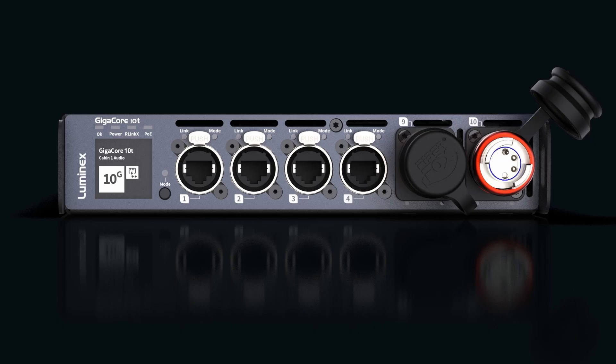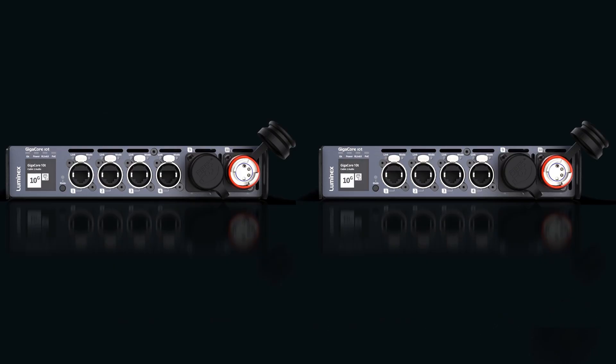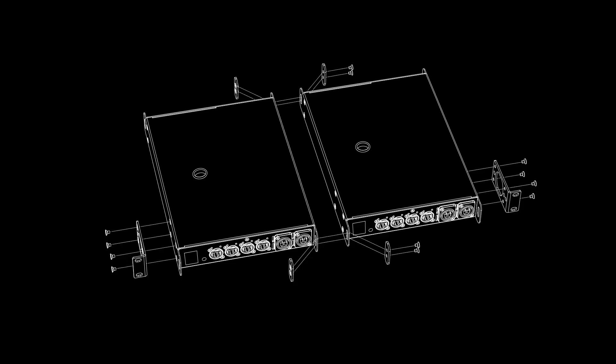Because of the nature of AVB, a truly redundant AVB network needs separate switches for the main AVB-A network and the backup AVB-B network. This can be achieved by using two GigaCore 10Ts mounted side by side in a one unit rack space.